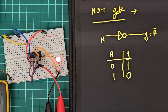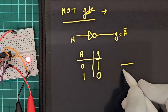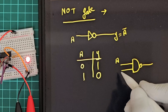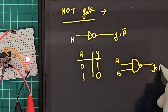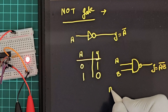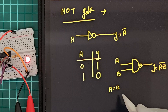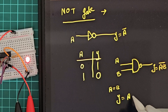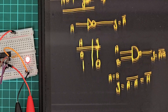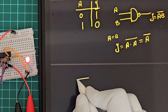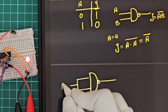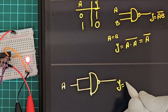We need to make this NOT gate by using the NAND gate. The NAND gate symbol has inputs A and B, and the output Y equals A·B bar. So if we make A equal to B, then Y equals A·A bar, which equals A bar. So if we just short the two inputs of the NAND gate, and the input is A, then the output Y equals A bar.